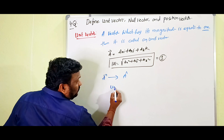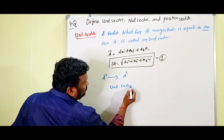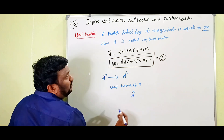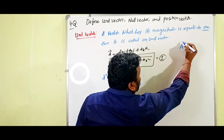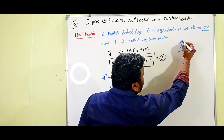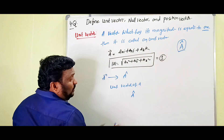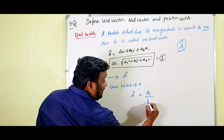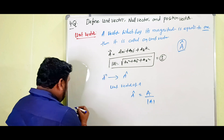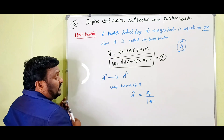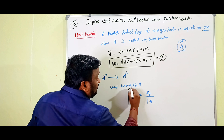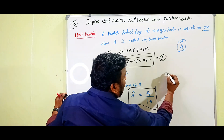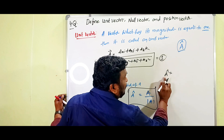This is the unit vector of A, that is A-cap. A-cap is the notation for unit vector. Now, unit vector A-cap is equal to A divided by mod of A. This is the formula for the unit vector of A.